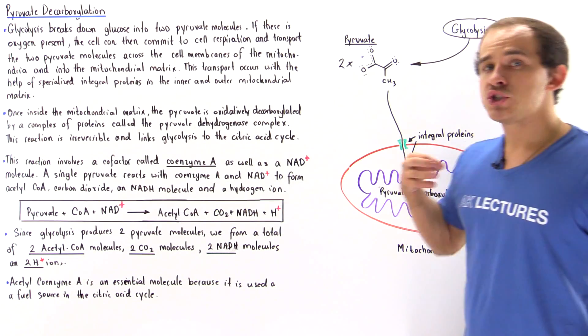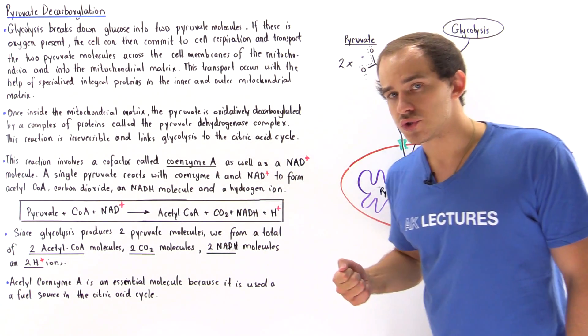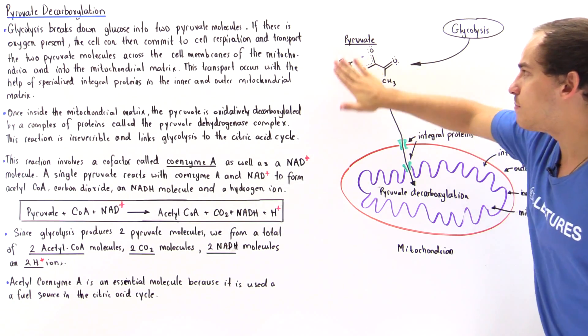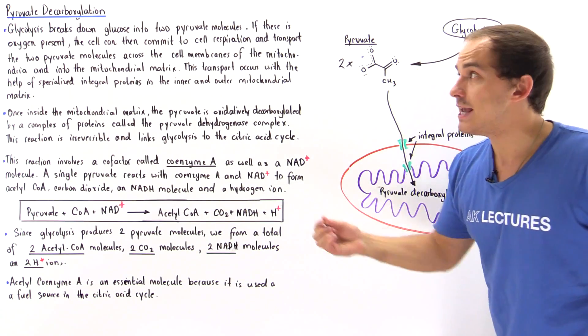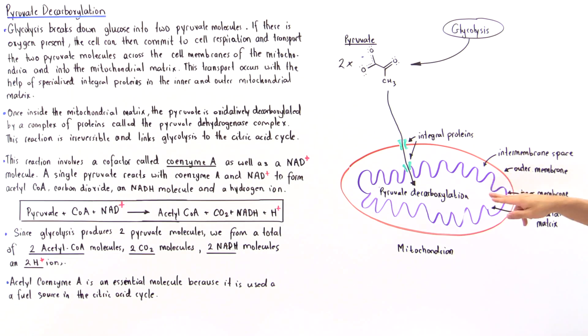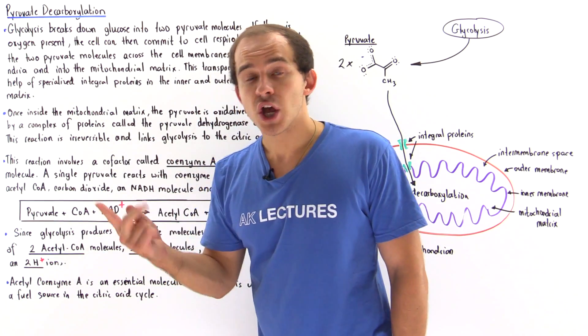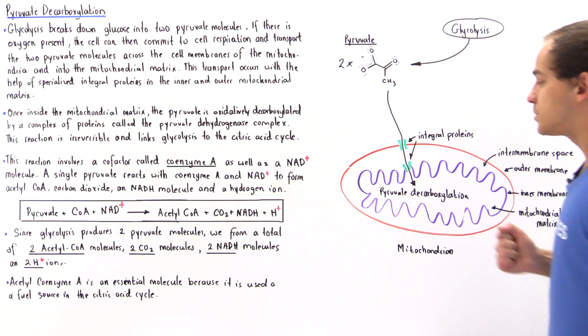Because we form two pyruvate molecules when we break down one glucose, both pyruvate molecules will undergo the decarboxylation reaction, and so this reaction takes place twice per single glucose molecule.